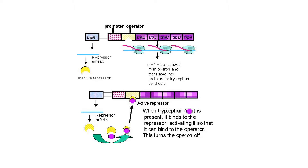This TinyTeach is about the tryptophan or trp operon. The trp operon is an example of a repressible operon. The structural genes are usually on — they're being transcribed and translated — but they can be turned off and are no longer transcribed and translated when the product of those structural genes is not necessary.